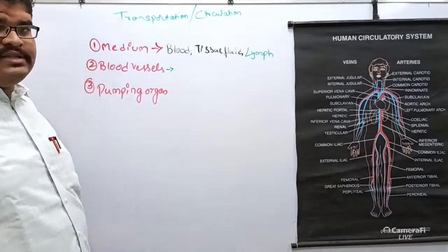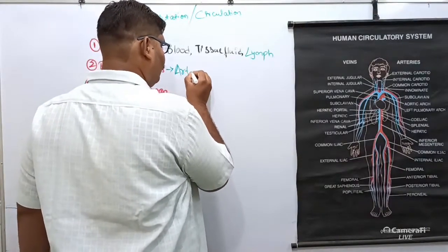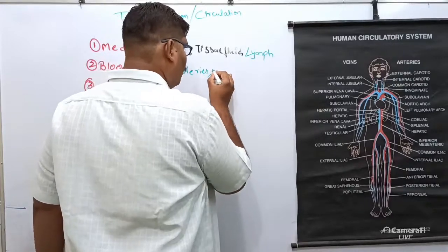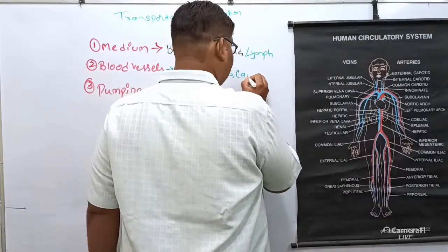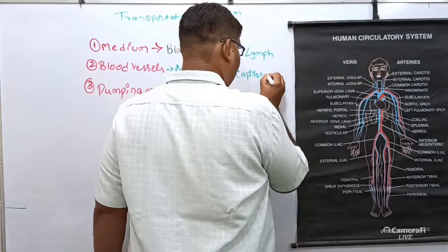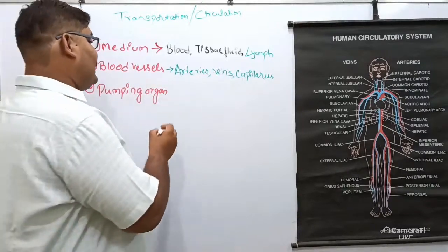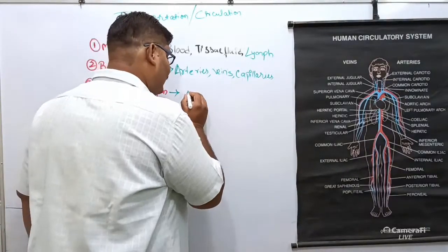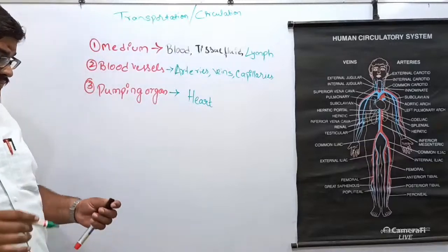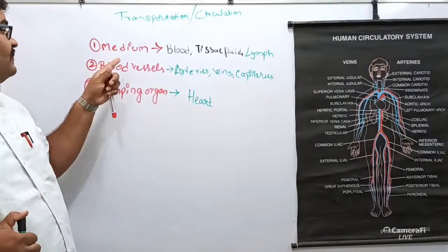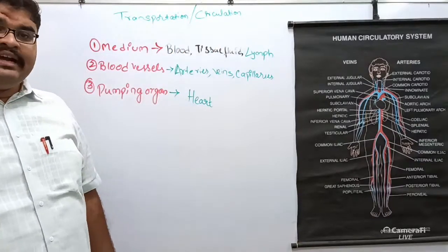The second component is blood vessels. Under blood vessels, we have arteries, veins, and capillaries — these are the three important components of the blood vessels. The third component is the pumping organ, which is the heart. Together, the medium, the blood vessels, and the pumping organ make the circulatory system complete.